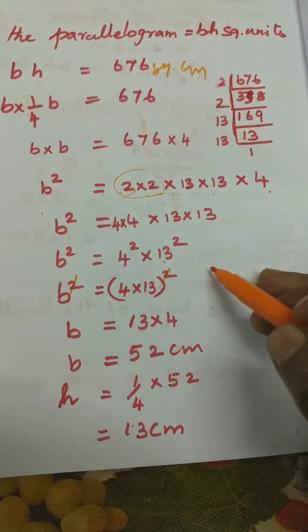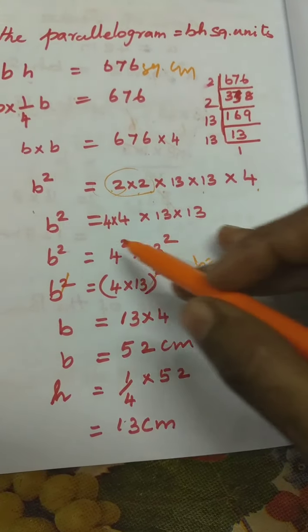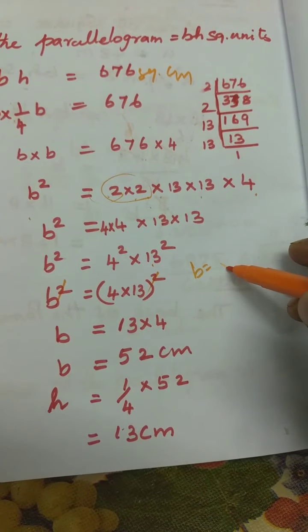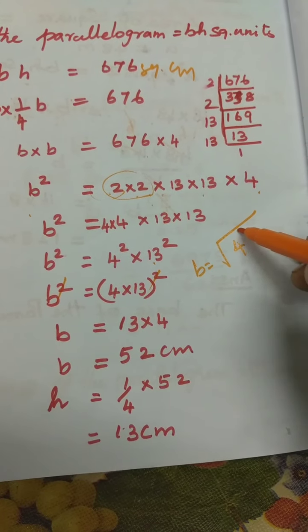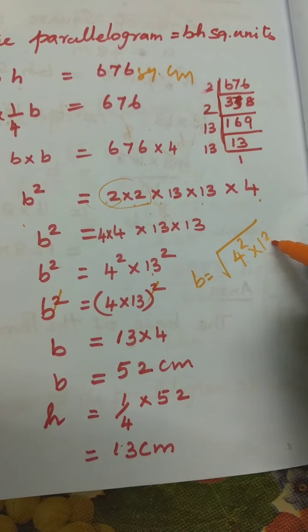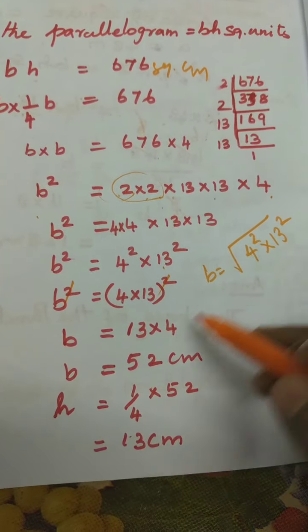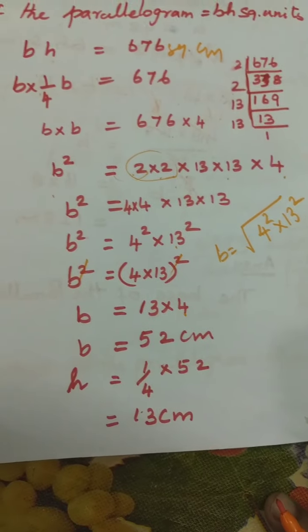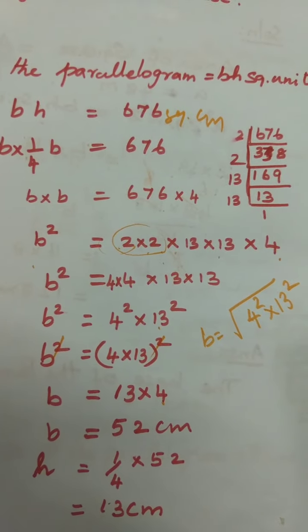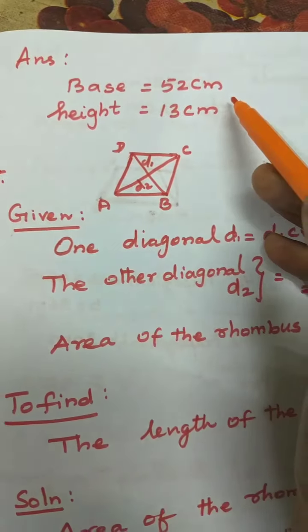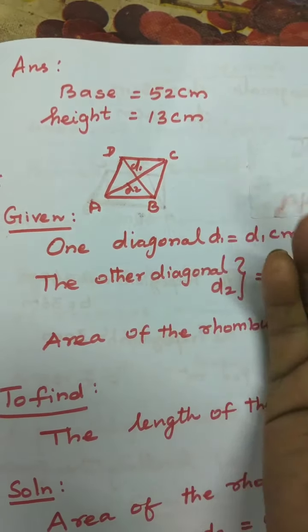You can also write b = √(4² × 13²), taking 4 and 13 outside the square root to get 52. Answer: base = 52 centimetres, height = 13 centimetres.